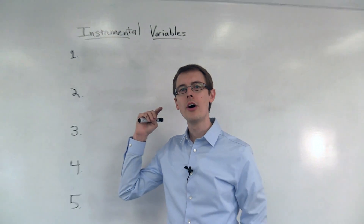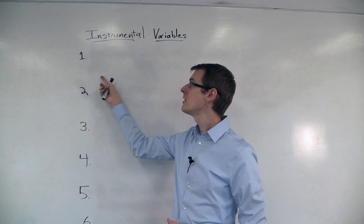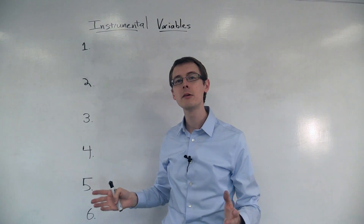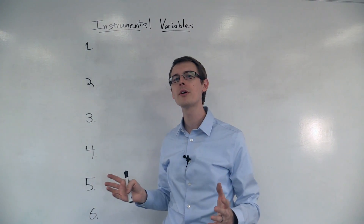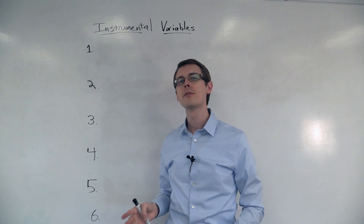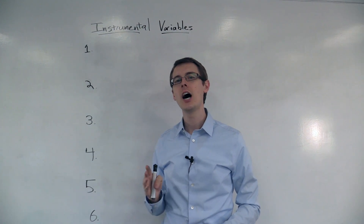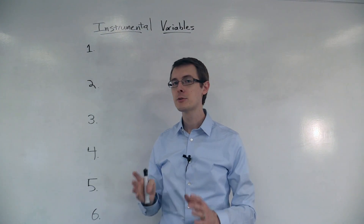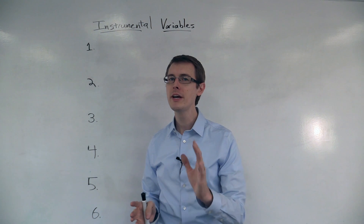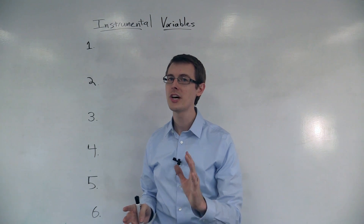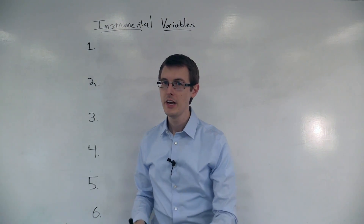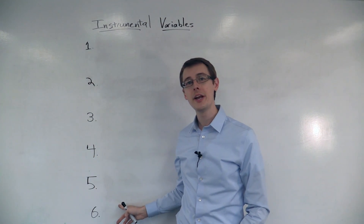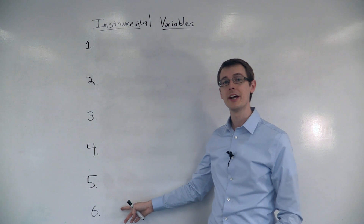Next, we're going to talk about something called instrumental variables analysis. It's one of the oldest and most important ways for learning about causality using observational data. It's pretty complicated, so pay really close attention. There are six steps involved in doing instrumental variables analysis.